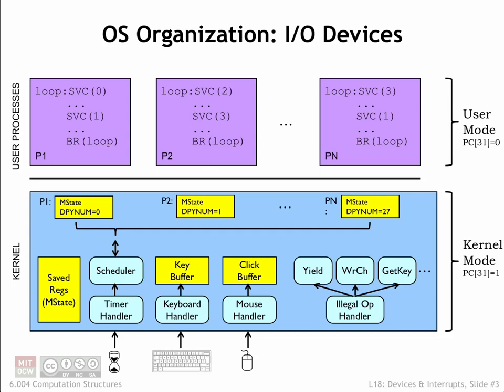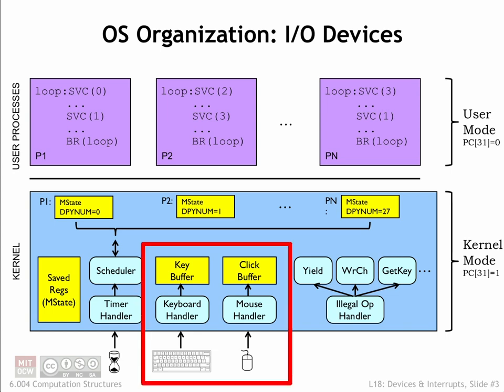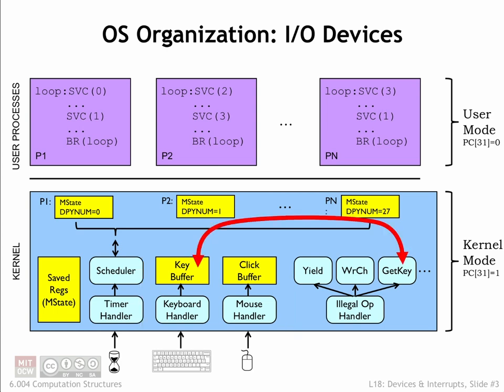Let's turn our attention to how the operating system deals with input-output devices. There are actually two parts to the discussion. First, we'll talk about how the OS interacts with the devices themselves. This will involve a combination of interrupt handlers and kernel buffers. Then we'll discuss how supervisor calls access the kernel buffers in response to requests from user-mode processes. This can get a bit tricky when the OS cannot complete the request at the time the SVC was executed.